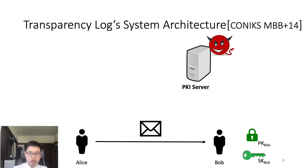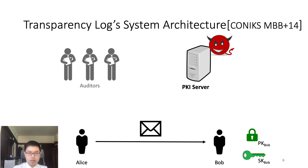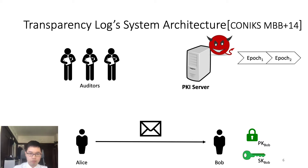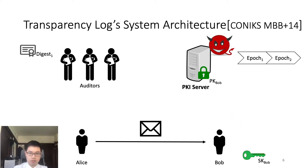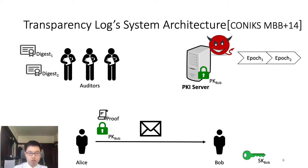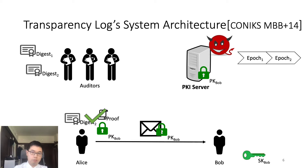Now let me introduce the system's architecture. I will use one of the prior works as a representative. In such a system, the PKI server will periodically upload a digest which summarizes the current state to the auditors. The PKI server will divide time into epochs, and at the end of each epoch, publish the digest to the auditors. The auditors will gossip this digest with each other to avoid equivocation. When users append a new public key, it will be summarized in the digest of the next epoch and sent to the auditors. When Alice retrieves Bob's public key from the PKI server, the server also provides a lookup proof, and Alice downloads the latest digest from the auditors. By checking the lookup proof and the digest, Alice can ensure this is the public key of Bob.